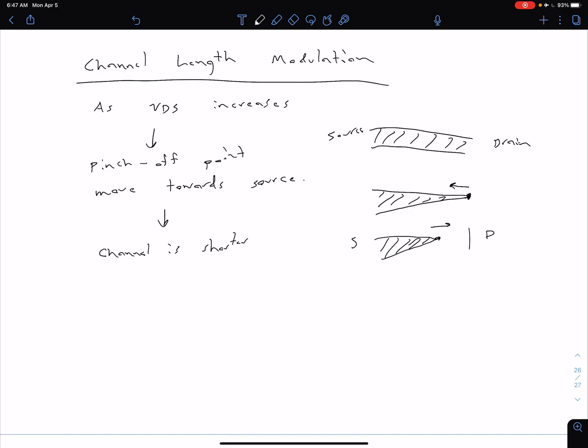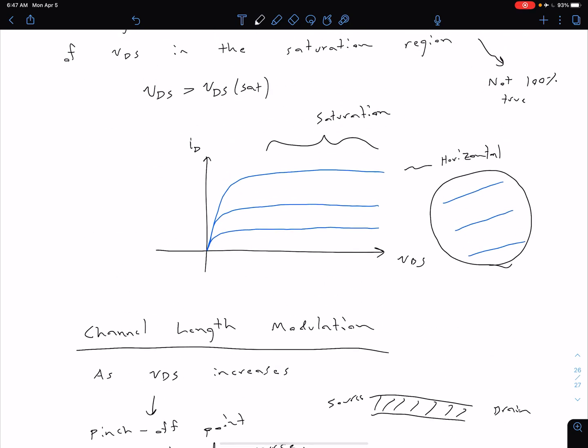If we have a shorter channel, that means we're going to have less resistance. If we have less resistance for a given voltage, that means we can have more current. What we're going to see is that as we move this way in our VDS, we're going to have some corresponding increase in our drain current while we're in the saturation region.